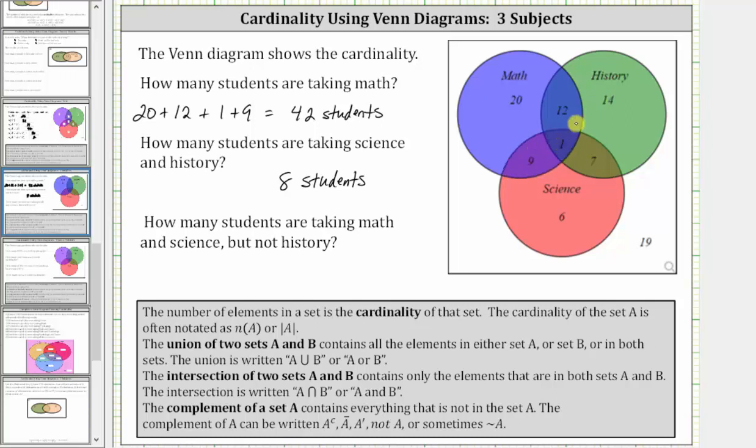But this one student is also taking history. The question is asking how many students take math and science but not history, which would be this set here. We don't include this one student because they're also taking history.